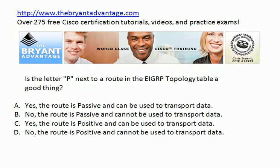Finally, that letter P is actually a good thing — it stands for passive. It sounds like we shouldn't use it, but it's a little counterintuitive. What passive means in EIGRP is that the algorithm DUAL is not currently calculating that route, which means it's okay to use it to transport data. Otherwise, we could see it marked A for active — which sounds good but is actually bad, because it is actively being calculated and can't be used at that time. So the letter P next to a route in the topology table is good: the route is passive and can be used to transport data.